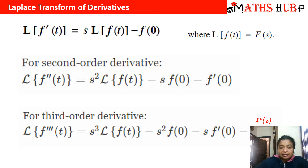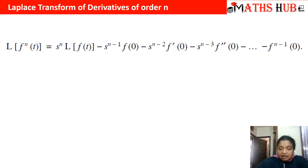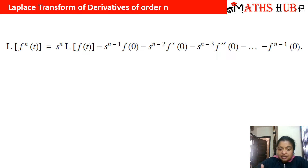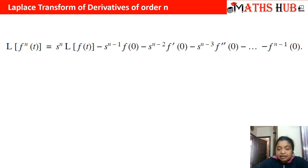Generalizing for any nth order derivative, the formula becomes: Laplace of f⁽ⁿ⁾(t) equals s^n times Laplace of f(t), then keep decreasing the power of s by 1 with each step — so it is s^(n−1)·f(0) minus s^(n−2)·f'(0) minus s^(n−3)·f''(0), and so on till f^(n−1)(0). Note that only the first term is positive; all remaining terms carry a negative sign.